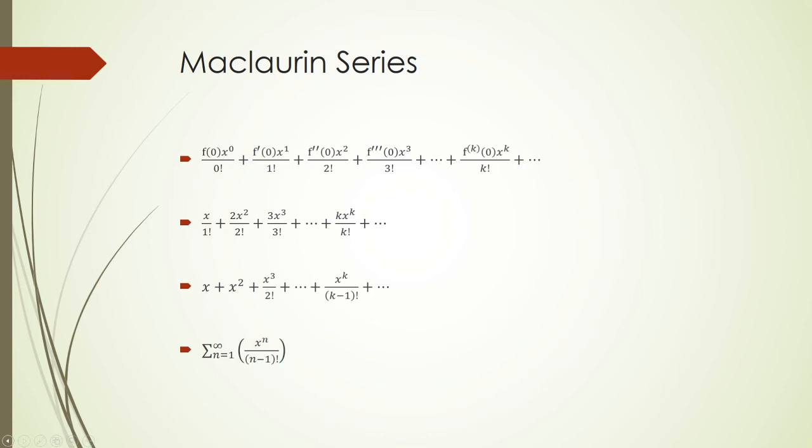This is the sum from n equals 1 to infinity of x to the n over n minus 1 factorial.